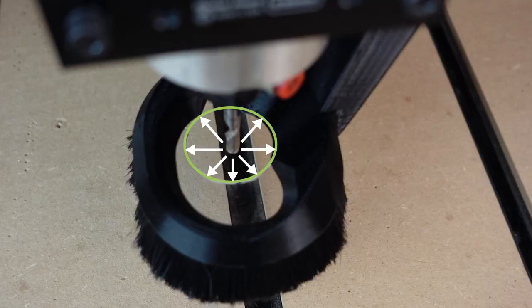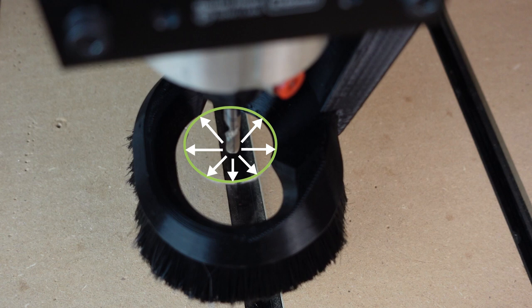As you can see the bit is now centered in the opening of the dust shoe and you are ready to go. More tips, tricks and resources can be found at cnc.com